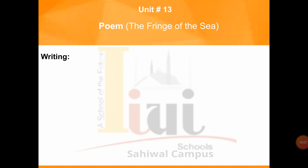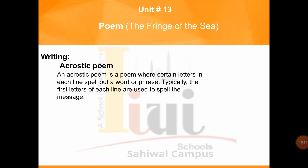Now let's move towards the writing portion from this unit. You are required to write an acrostic poem. Do you know what an acrostic poem is? An acrostic poem is a poem where certain letters in each line spell out a word or phrase — typically the first letters of each line. For example, look at page number 89, writing portion. In the yellow box, a poem is given. If you look at the first letters of the lines, you will see they spell H-A-P-P-I-N-E-S-S, forming the word 'happiness.'